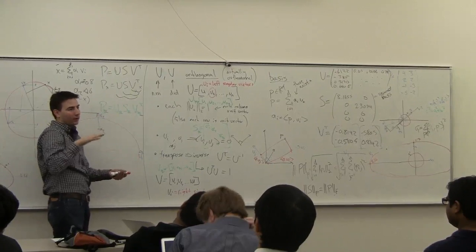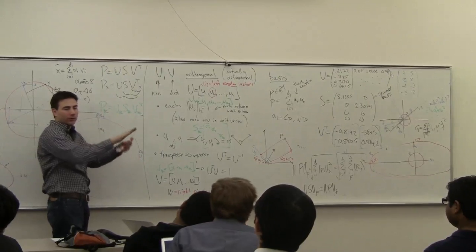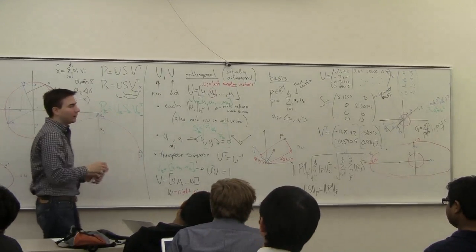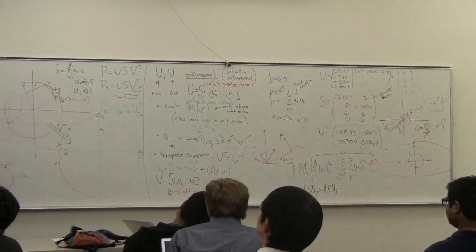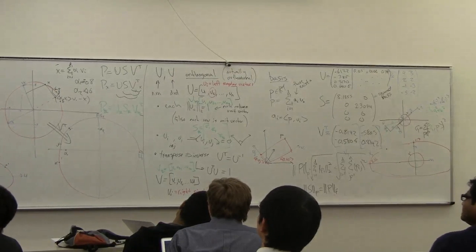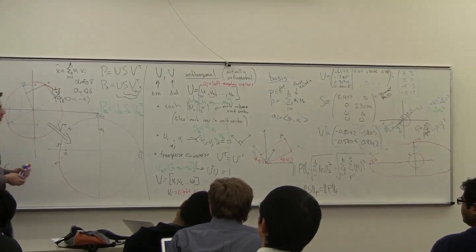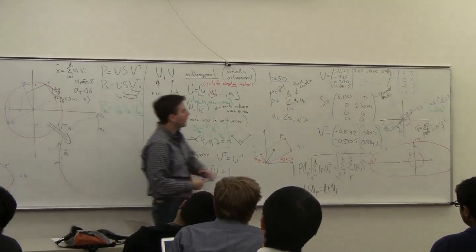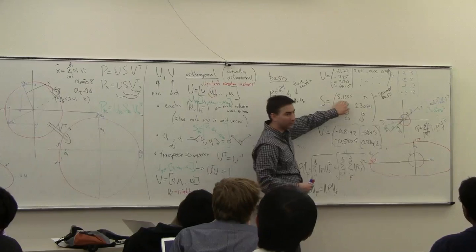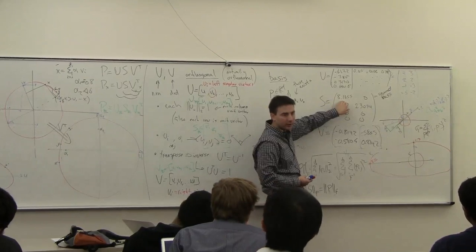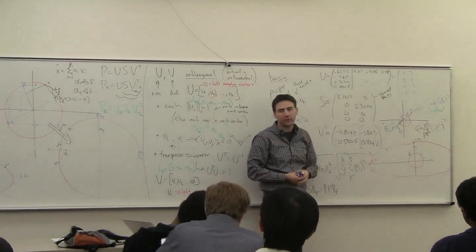And these are now simpler. These are the core components, the core modes of the variation. And this is why they call it principal component analysis. These vectors are the principal components of the data. And you know exactly how important they are by looking at these values, these singular values.